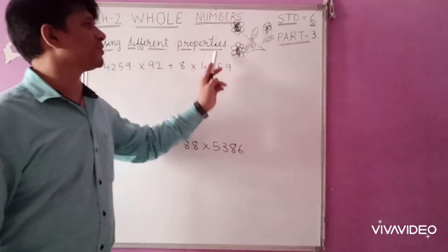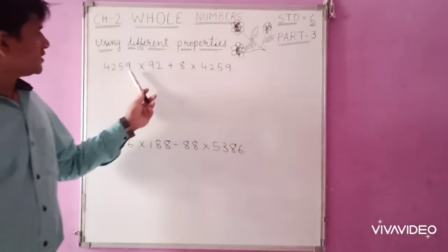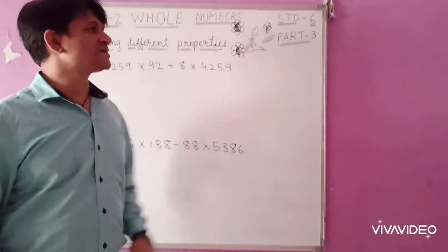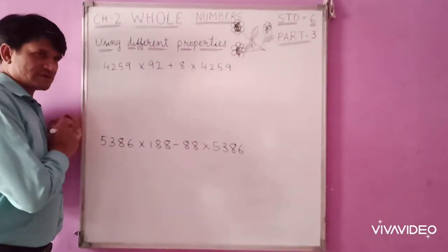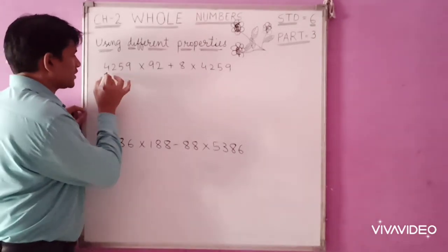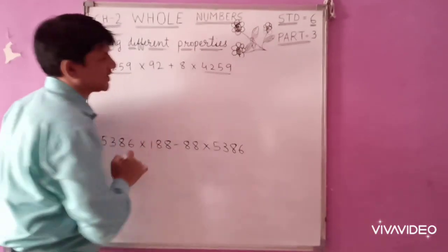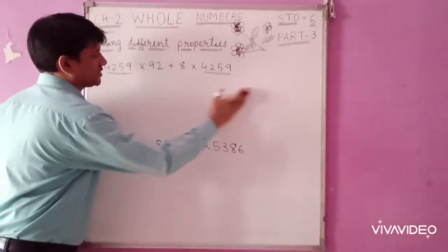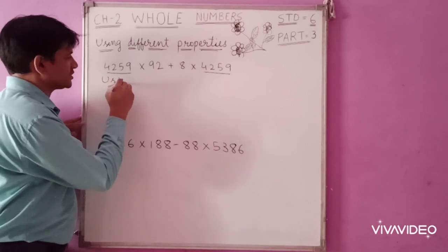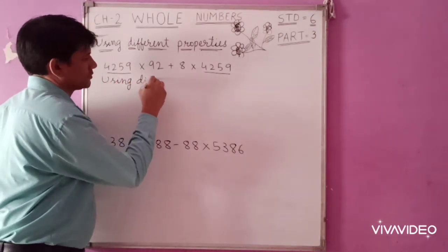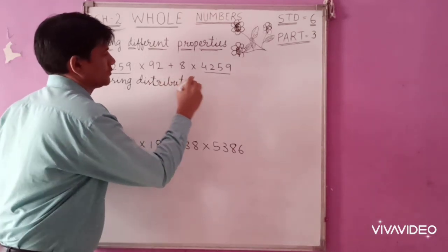Now using different properties — distributive property of multiplication over subtraction. How do we use the distributive property here? You can see 4259 appears here as well as here. So we will take 4259 as common and write the expression using the distributive property.